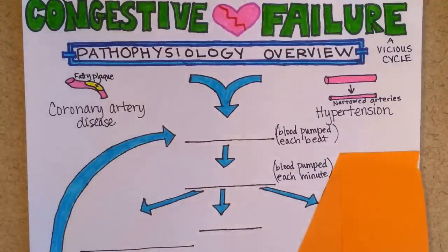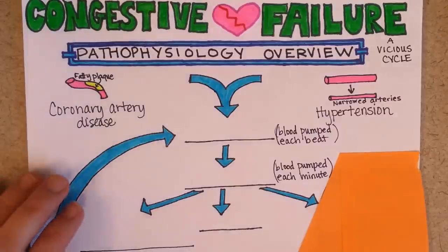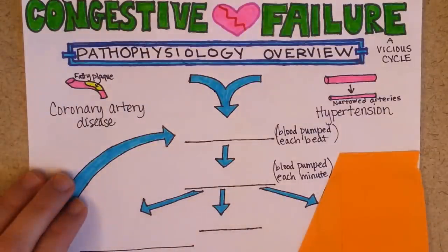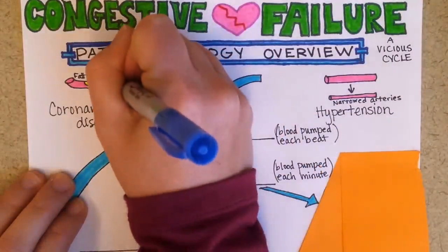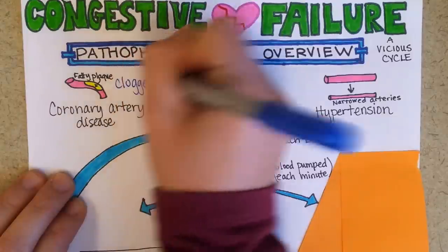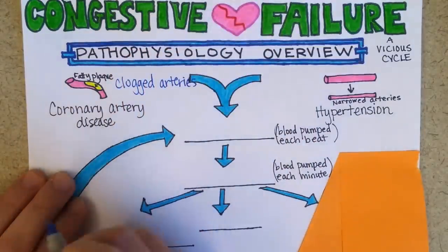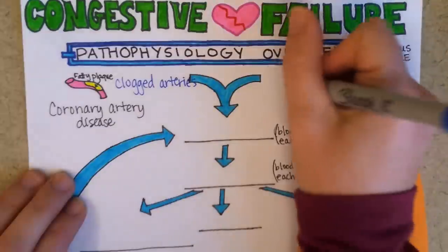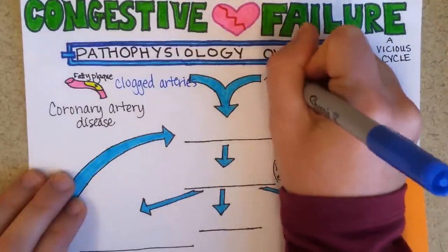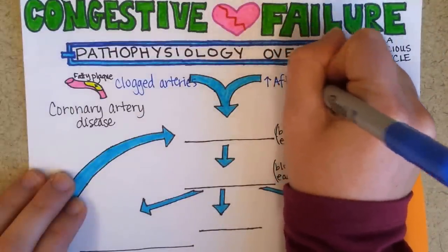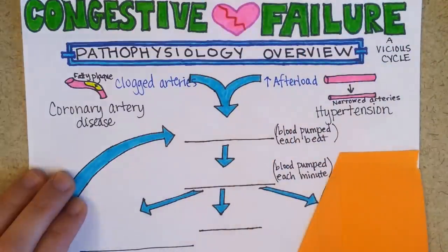Congestive heart failure pathophysiology overview. Congestive heart failure usually starts from some kind of damage or weakening to the heart muscle, usually caused by clogged arteries due to coronary artery disease or increased afterload from chronic, long-term hypertension.